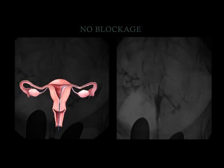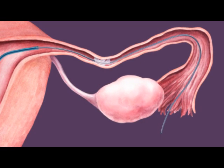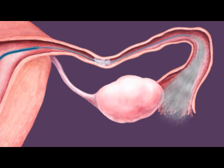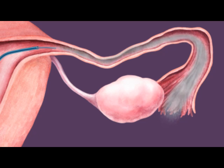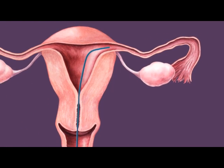A new x-ray should show the dye flowing out the opened end of the fallopian tube. As the micro-catheter is withdrawn, saline solution is pumped through it into the fallopian tube. The pressure of the saline solution will clear any remaining debris that caused the blockage, leaving behind an open tube.